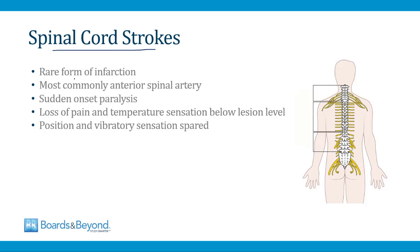Spinal cord strokes are a very rare form of infarction, most commonly involving the anterior spinal artery. When there's a stroke of the anterior spinal artery, this leads to the sudden onset of paralysis below the lesion, as well as loss of pain and temperature sensation below the lesion. Position and vibratory sense will be spared, because that information runs in the posterior part of the spinal cord, which is not supplied by the anterior spinal artery.